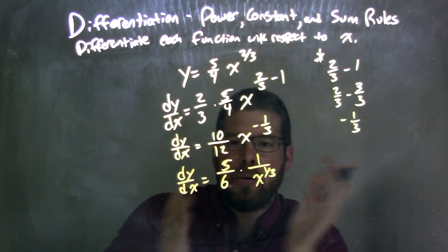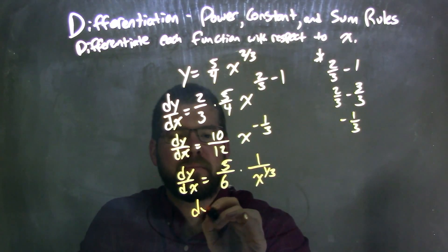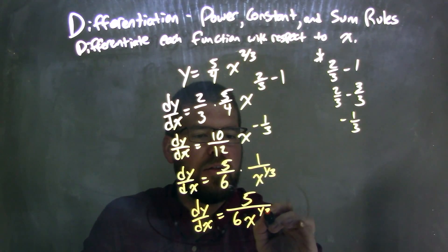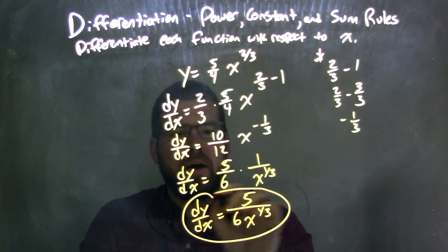And now I think we'll combine this into one big fraction. dy dx is 5, right? Multiply across: 5 over 6x to the 1 third power. And that's how we would write our final answer.